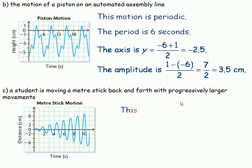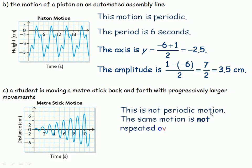Last example in the bottom. A student's moving a meter stick back and forth with progressively larger movements. Because they're progressively larger, that's why this is not a periodic motion. The same motion is not repeated over and over again. It may be similar, but it's not the same motion because if we were to call it the amplitude, the amplitude is getting larger. With progressively larger movements, that's why it's not the same motion repeated over time. So it's not periodic motion, so we don't have to list the period or the axis or the amplitude.